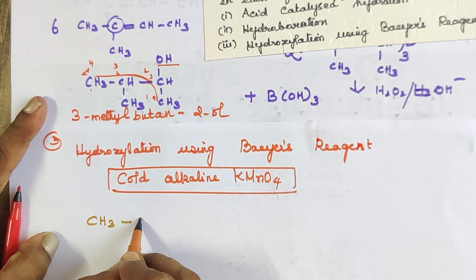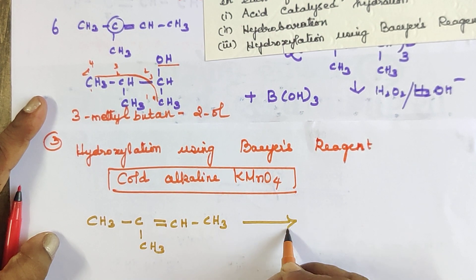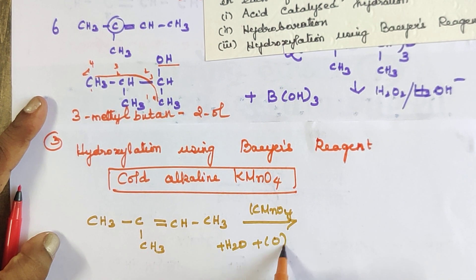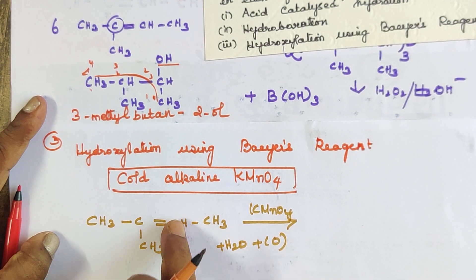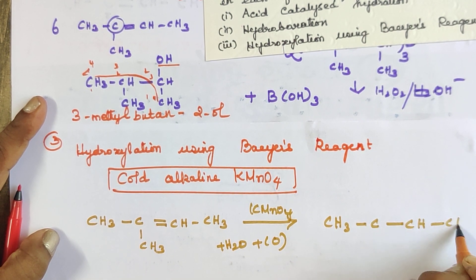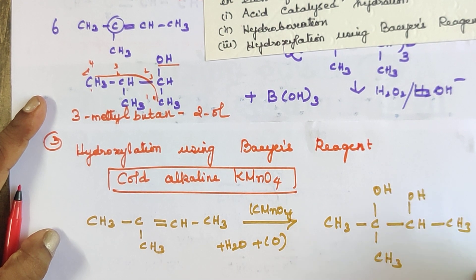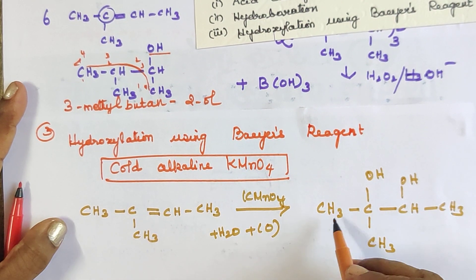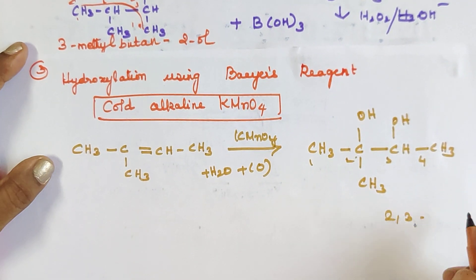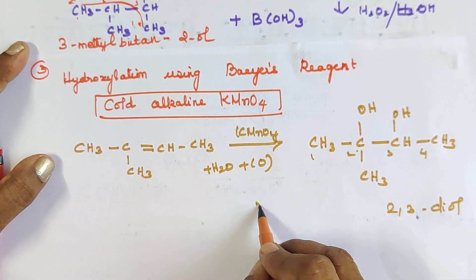Taking 2-methyl-but-2-ene and treating it with Baeyer's reagent (cold dilute KMnO₄ plus water), two OH groups add across the double bond carbons. The product is 2-methyl-butane-2,3-diol, a vicinal diol.